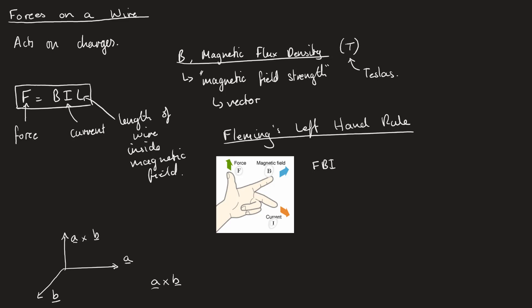For the magnetic field and the current, it's fairly straightforward to know which direction they're going in. We usually have notations for the magnetic field where we'll either have arrows which point in the direction it's going - up or down - but it can also come in or out of the screen. If it's coming towards us, we think of it like an arrowhead - this is out of the screen. And if an arrow was fired away from you, you would see the fletching at the back - this is going into the screen.